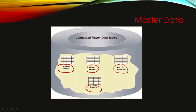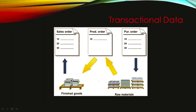We create master data in SAP so that it can be used by transactional data. Transactional data means when we create a transaction — for example, creating a production order in SAP PP, a sales order in SAP SD, or a purchase order in SAP MM. Whenever we create a transaction, the system reads the master data. For example, when you create a production order and enter a material code, the system fetches all the details — description, units of measure, weight — from the material master record.